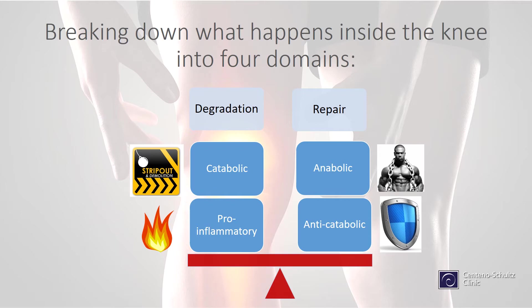we see what we call catabolism — that's like demolition — meaning we have chemicals that will break cartilage down. A little bit of breakdown is fine; it's actually needed to help repair. But when it gets out of control, that's a problem. On the degradation side, we also have too much inflammation occurring. Inflammation is needed for repair, but when it gets out of control, that leads to bad cartilage cells.